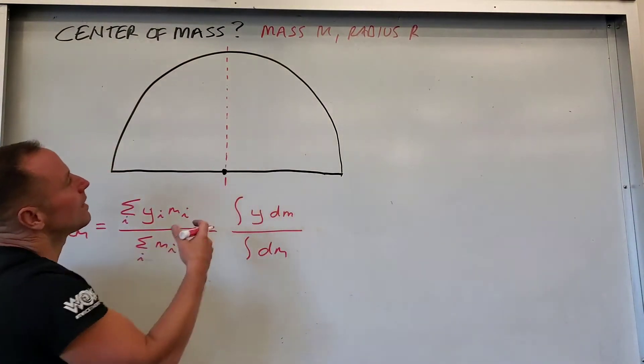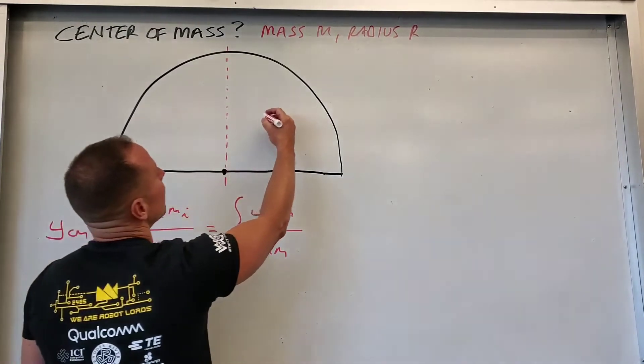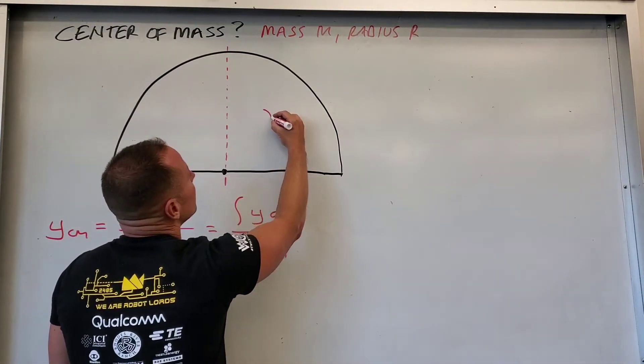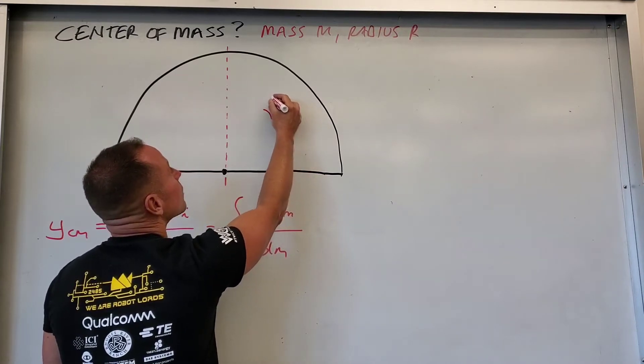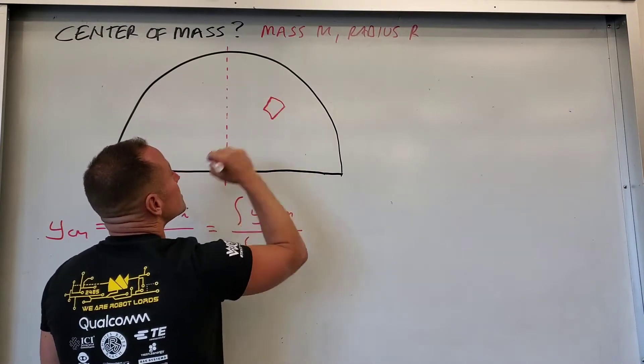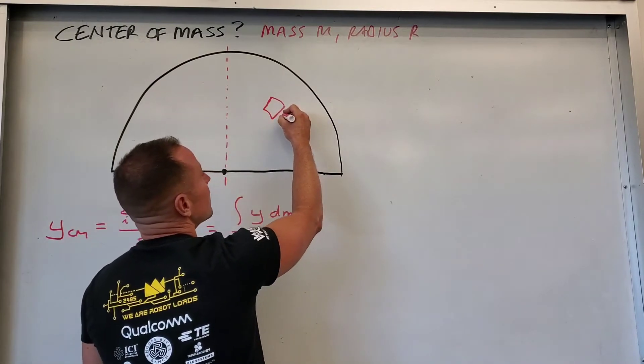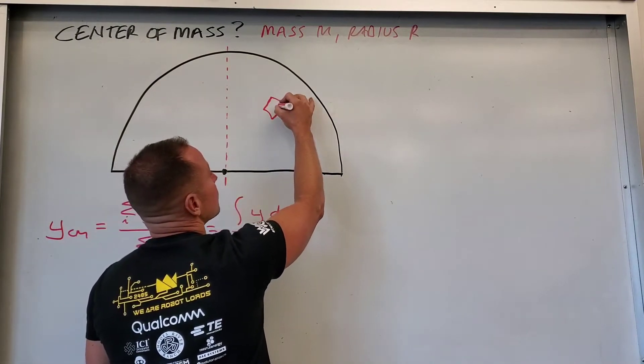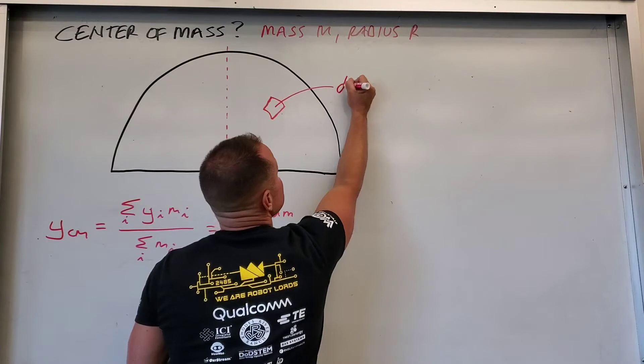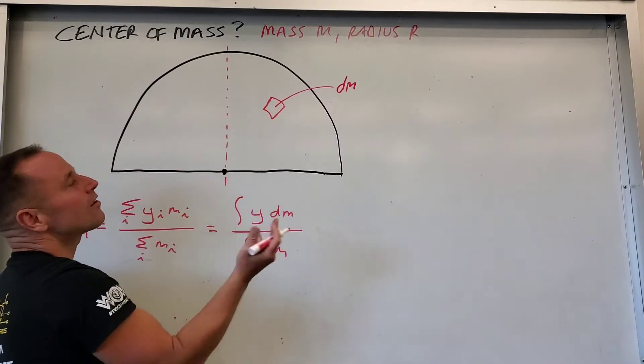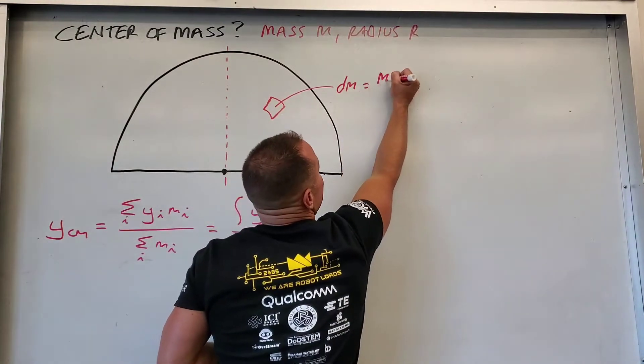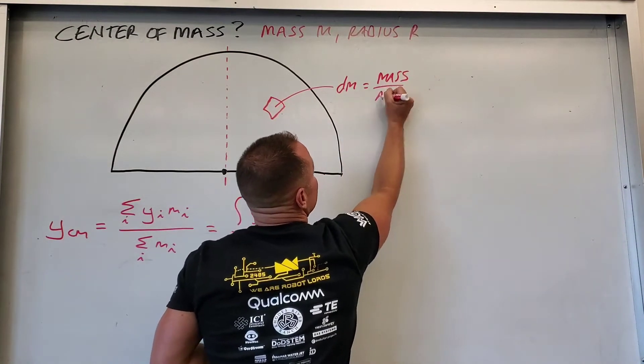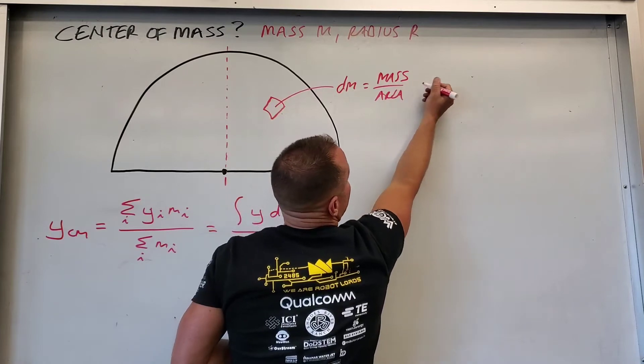The way that we're going to choose to carve this thing up is we'll use little primitive area elements in polar coordinates. So what we're going to do is this little chunk here, this little guy has mass dm. And the hardest part of this is coming up with how to express this. This guy is mass per area times area.